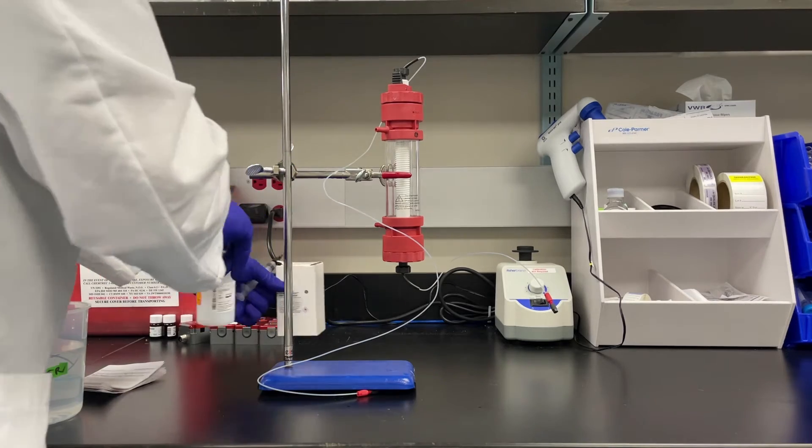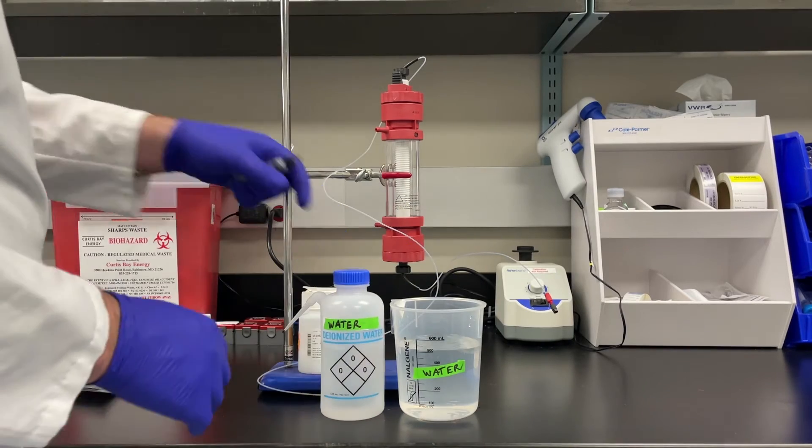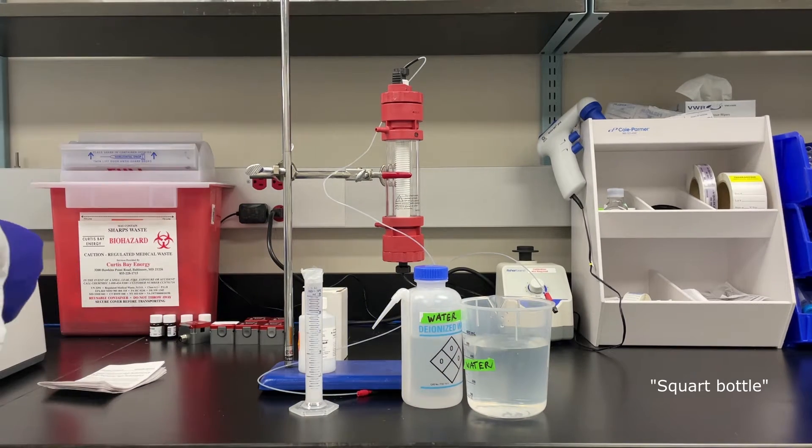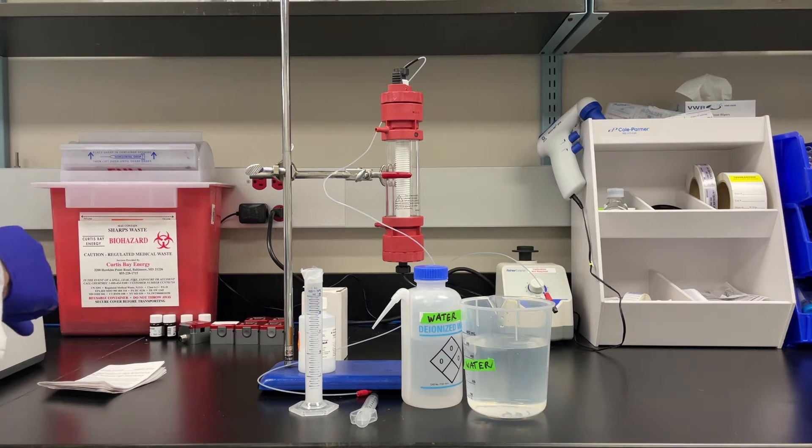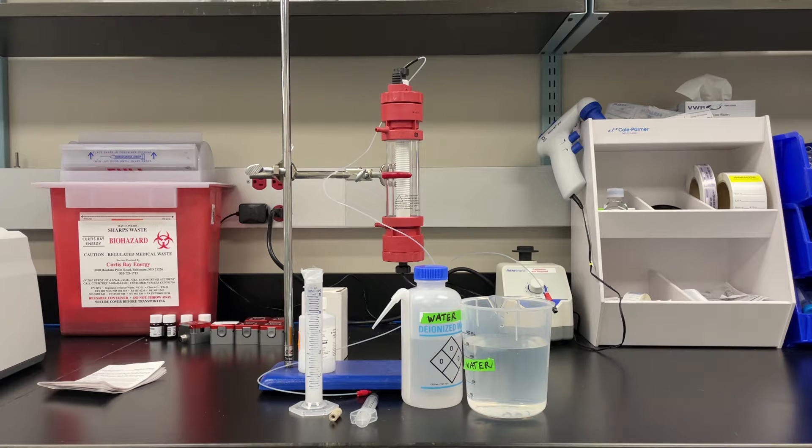To pack this column, we're going to need the resin that's in the bottle, some water, and a water bottle that has a little spout on it, the resin that was in the graduated cylinder, a syringe, and an adapter that'll allow us to attach the syringe to the column.